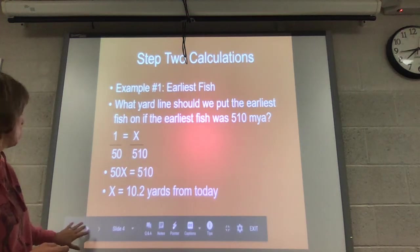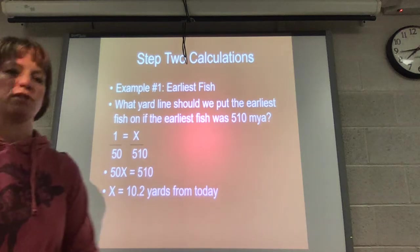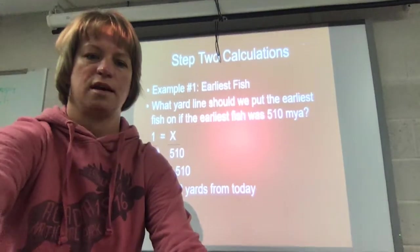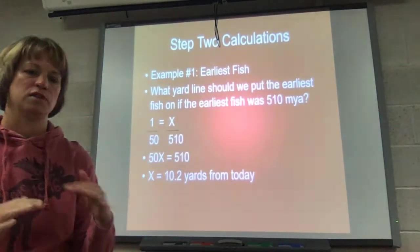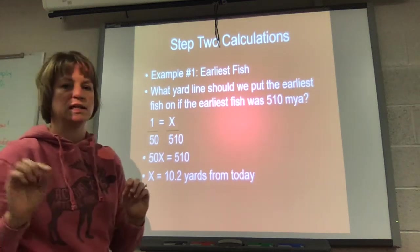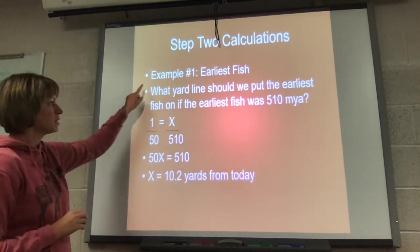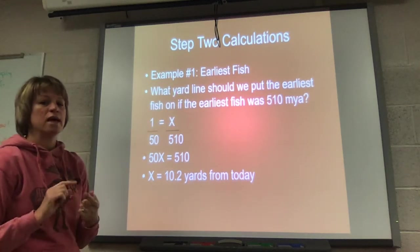So this goal line, where you'd score a touchdown, is actually right now. So you've predicted actually four different events, but what I want to show you now is how you're going to figure out if your predictions are right. So you have this doc that has a bunch of different calculations to make about what yard line these things should really be placed on.